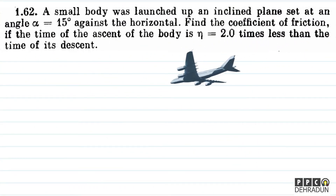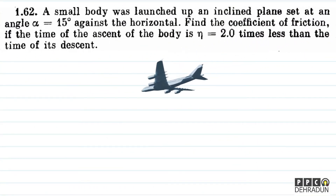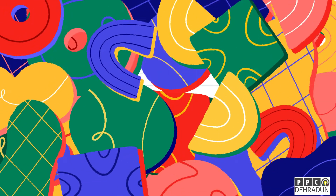Let's have a look at this beautiful problem from Irodov. The question says: a small body was launched up an inclined plane set at an angle alpha equal to 15 degrees against the horizontal. Find the coefficient of friction if the time of ascent of the body is eta equal to 2 times less than the time of its descent.